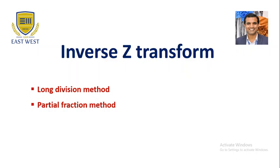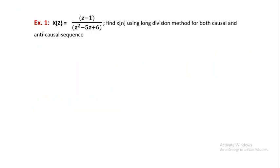In this session, let us discuss the inverse Z-transform. The inverse Z-transform can be solved in two ways: one is the long division method, and the other is the partial fraction method. First, let us consider the long division method, where we have an example: X(z) = (z - 1) / (z² - 5z + 6). Here we have to find x(n) using the long division method for both causal and anti-causal sequences.